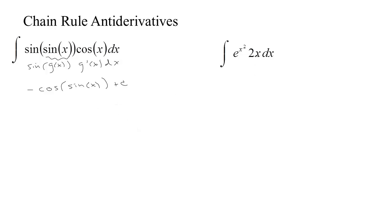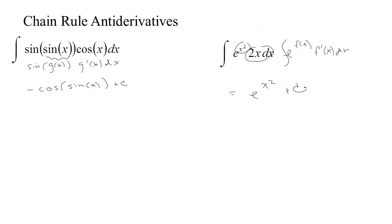Over here, we've got a function x squared, and its derivative is multiplying dx. So we're thinking we've got e to the f of x times f prime of x. And we know that that integral should be e to the f of x. So we could guess that this is probably the solution, and then just check it. Take the derivative of e to the x squared — you get e to the x squared times 2x, which is exactly what we have.